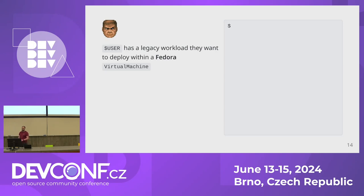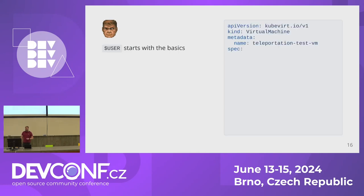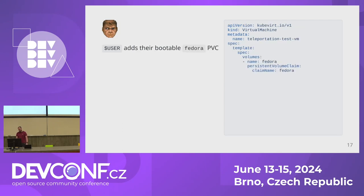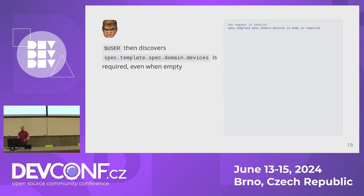A user has a legacy workload they want to deploy within a VM in KubeVirt. Like most novice users, they'll fire up their favorite editor and work on a YAML file to contain their definition. It starts with some basics — API version, kind, and so on, everything looks fine. They soon discover some complexities: we actually nest the spec of a virtual machine instance within the spec of the virtual machine, so you're already going quite deep before you define anything meaningful. The user assigns some resources — in this silly example, 4 megabytes, which is what the original Doom required.